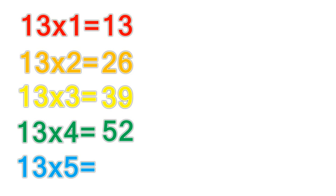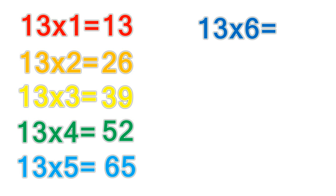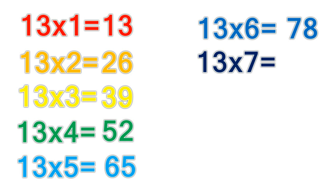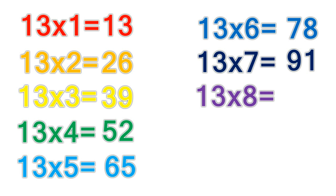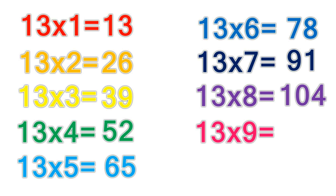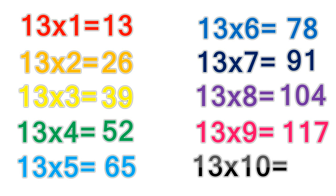13 times table. 13 times 5 equals 65. 13 times 6 equals 78. 13 times 7 equals 91. 13 times 8 equals 104. 13 times 9 equals 117. 13 times 10 equals 130.